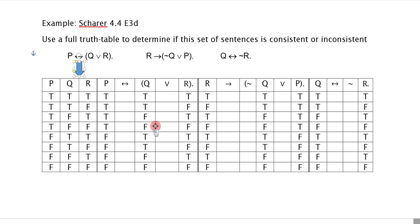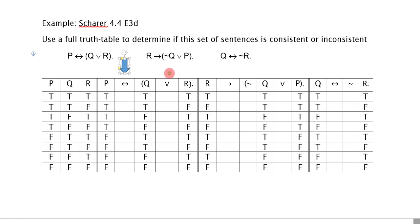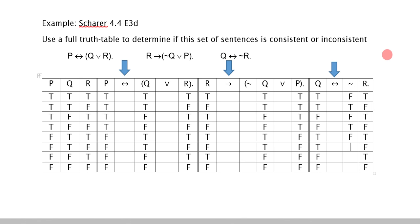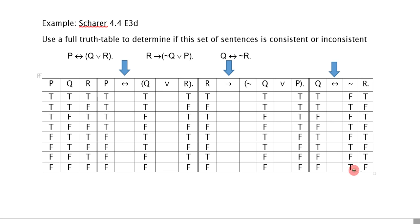I'm looking for the main connectives. The main connective of the first sentence is the biconditional because the OR is tied up in the brackets and doesn't bind everything. The second sentence's main connective is the conditional. The third sentence is also the biconditional because the negation has the lowest ranking in the hierarchy. Going from easiest sentence out: for the third sentence, the negation modifies R and just reverses it. Then for the biconditional, which is true when both sides are the same, Q is true and negation is false, so that's false; where they're both the same, it's true.